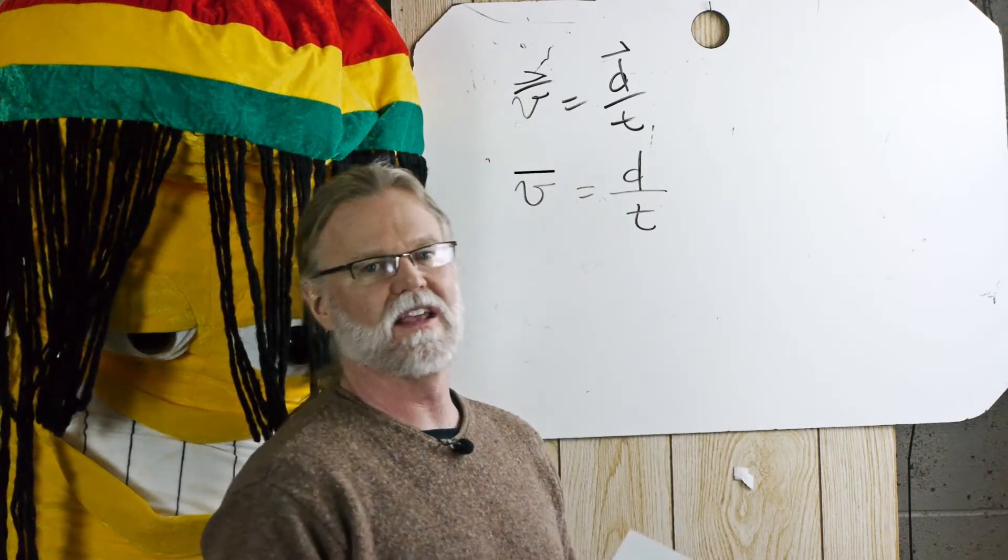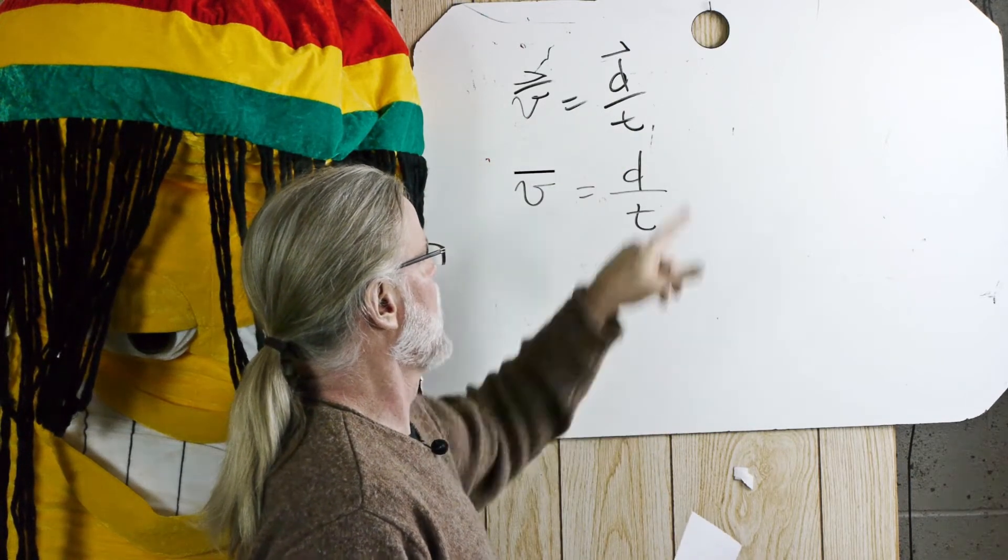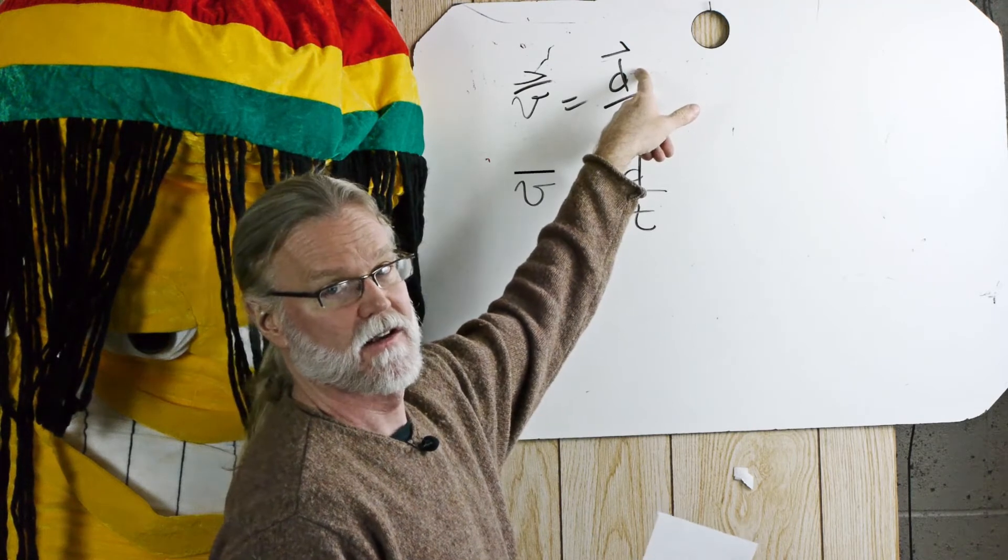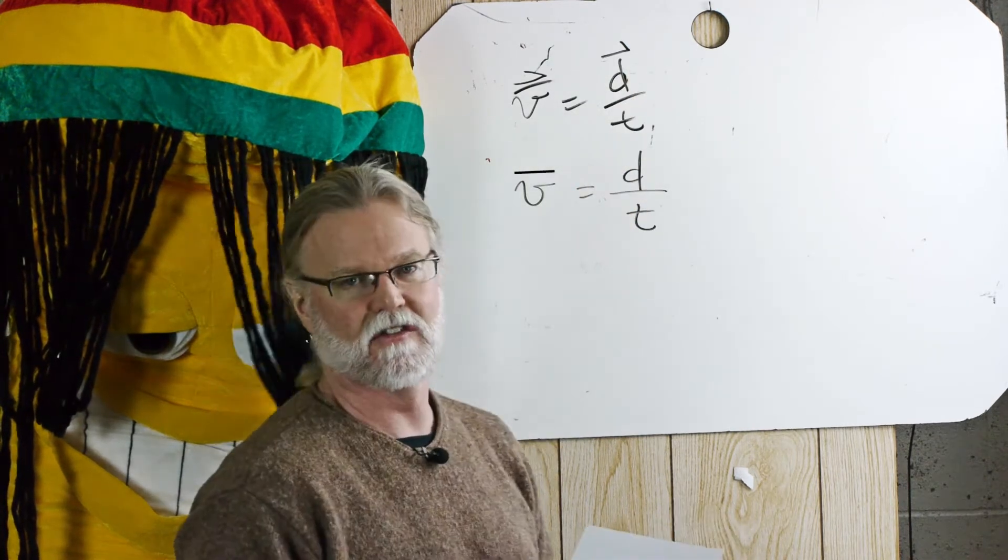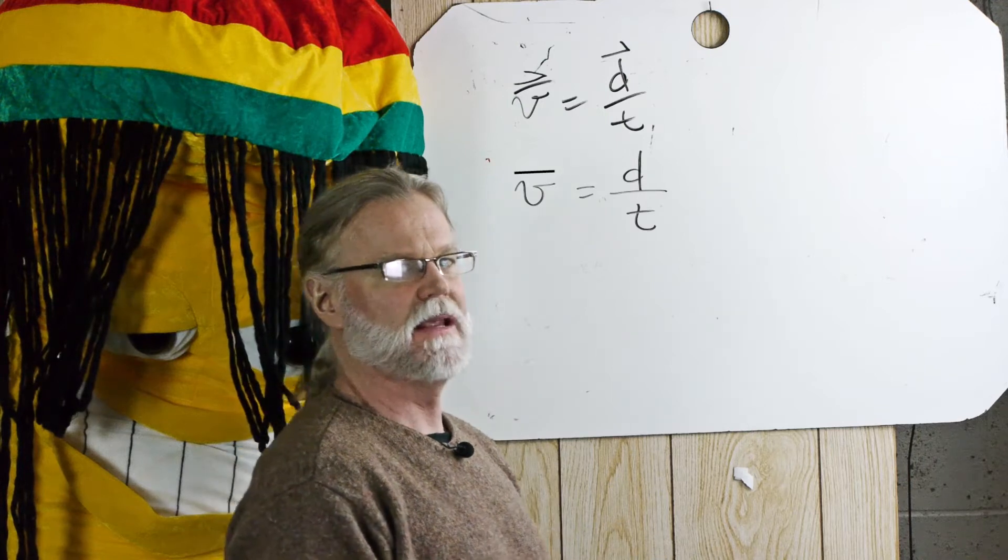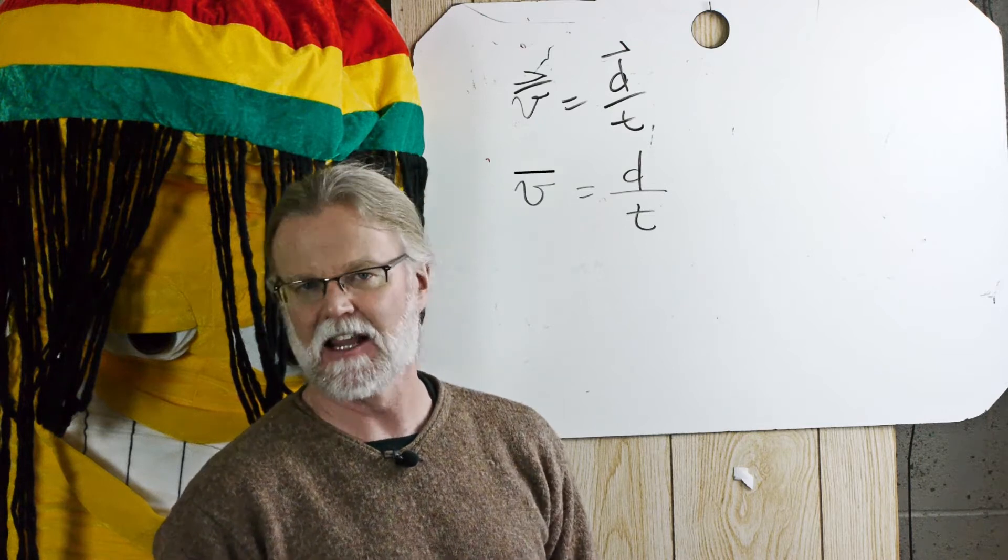They both start with V, so that's easy to remember. Velocity equals displacement divided by time. Displacement is a vector. Speed equals distance divided by time. Speed is a scalar. It starts with an S. They both start with S. Speed is a scalar.